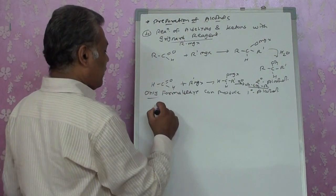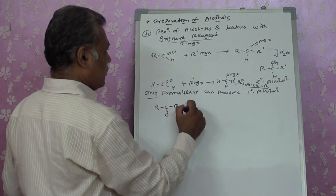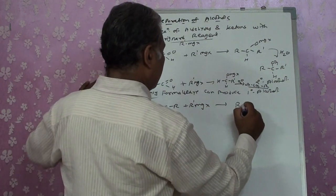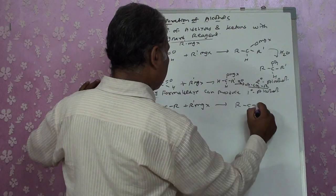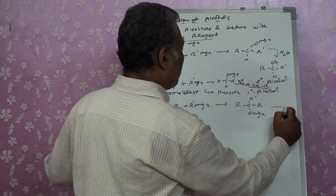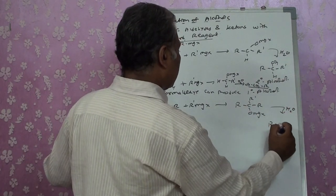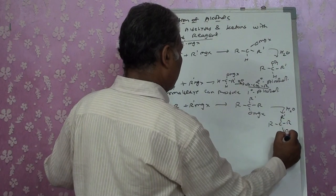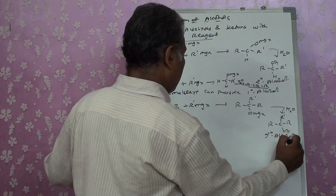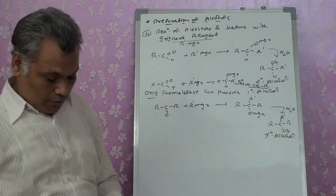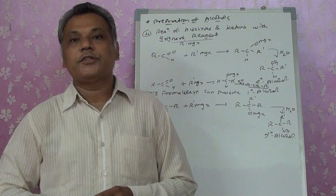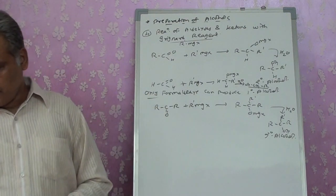If we have a ketone and react it with RMgX, it gets converted into R–C(OMgX)–R', and R'' is attached to the carbon. On following hydrolysis, we get a tertiary alcohol. So: ketone on reduction produces secondary alcohol, while ketone with Grignard reagent produces tertiary alcohol.